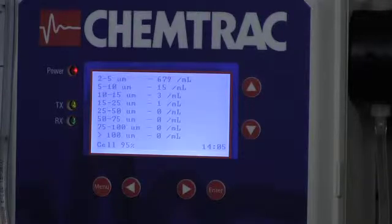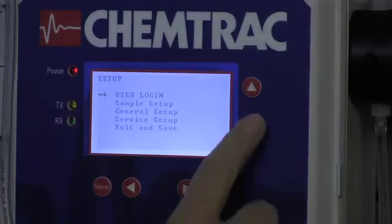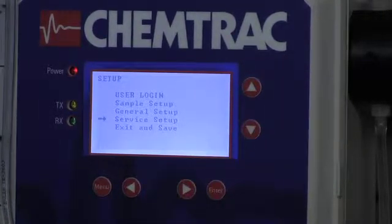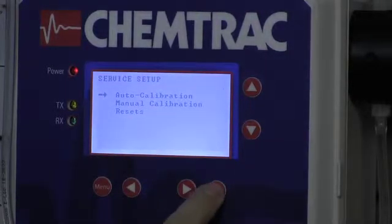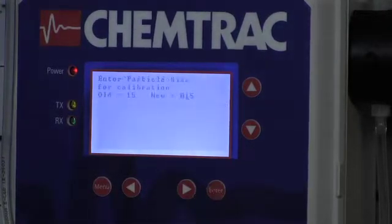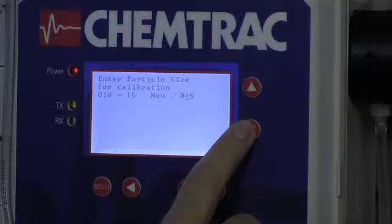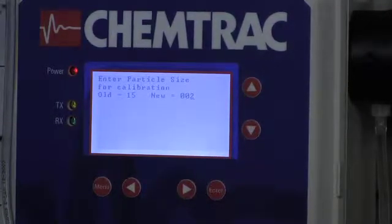So what we're going to do is go in and actually perform the calibration. This is where things get a lot easier. We're going to go to the menu, go to service setup, go to where it says auto calibration, auto adjust threshold, and then we're going to tell it we want to calibrate 2 micron, and enter.